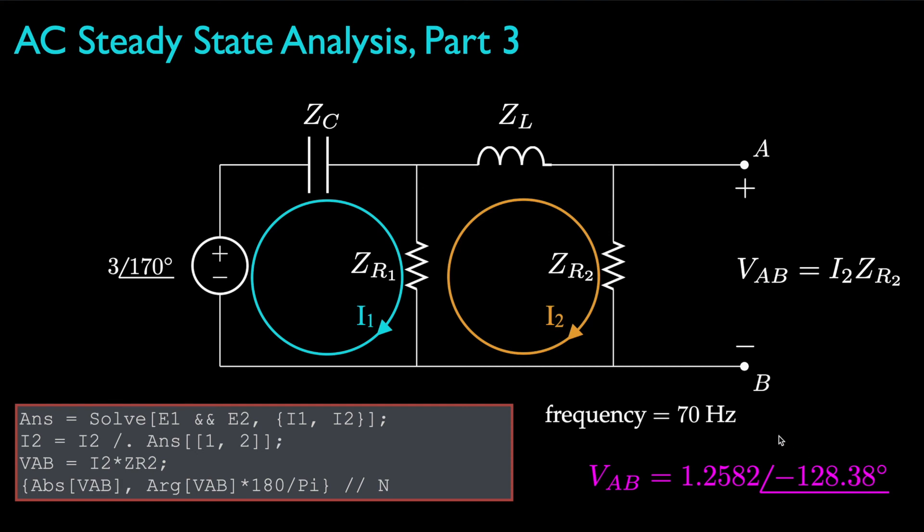Again, once we know how to convert inductors and capacitors to their complex valued impedances, we can use any of the methods we've learned for solving DC circuits to solve for unknown voltages and currents in steady-state AC circuits. We just need to now perform all of our algebra with complex numbers.